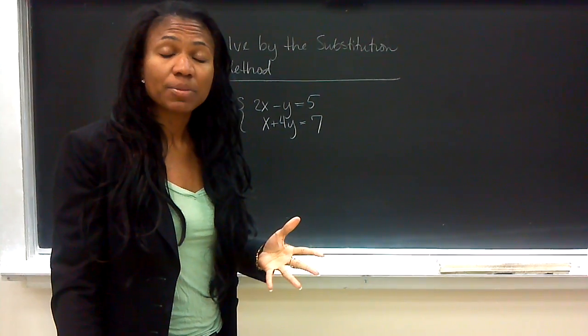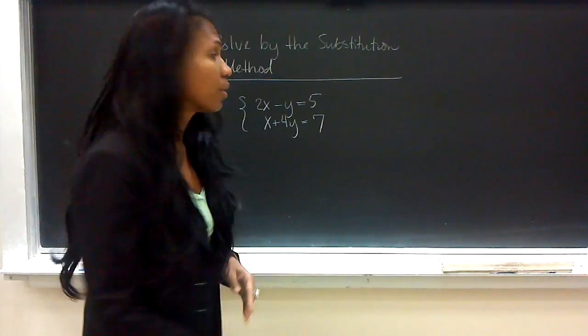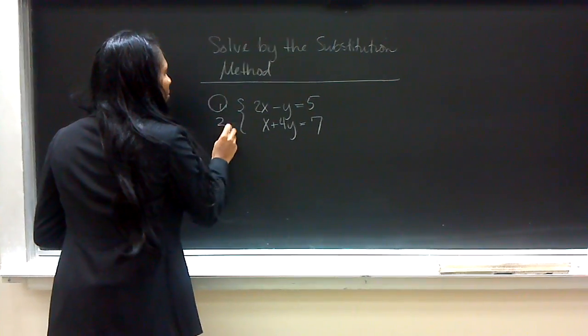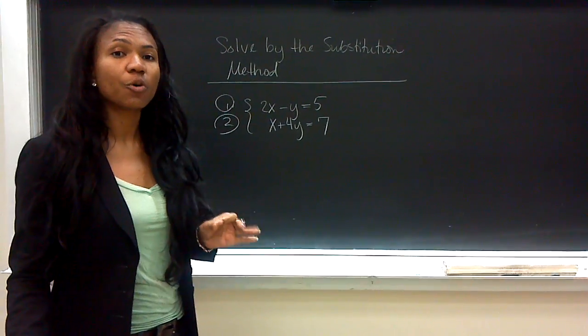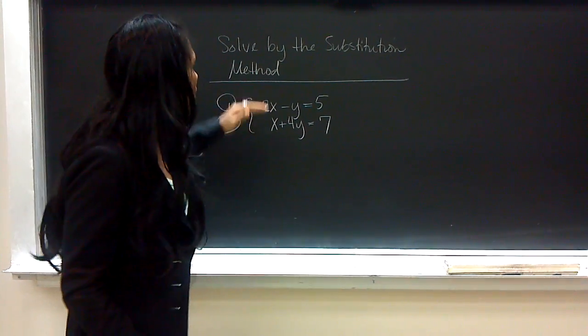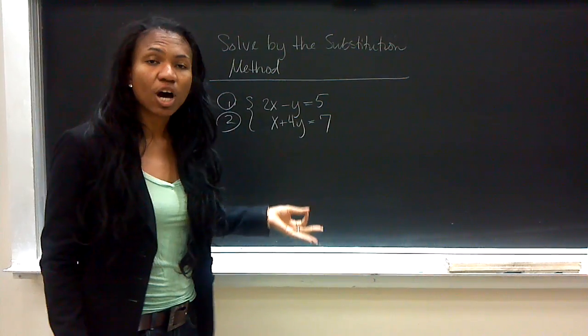This is the steps for solving the system. We first want to number the equations. That's always going to be helpful. Next, we want to pick an equation and solve for a variable.